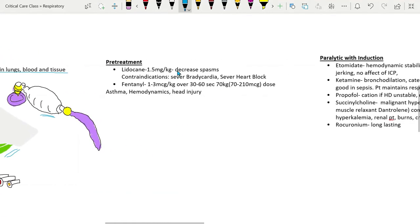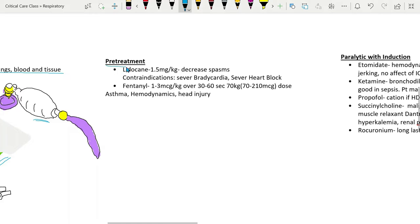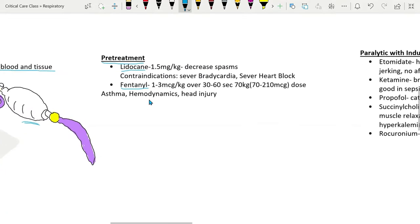Next is pretreatment with lidocaine or fentanyl to achieve analgesia. It is used to decrease irritation of the throat during laryngoscopy. Lidocaine is used to decrease spasms in asthmatics during intubation.